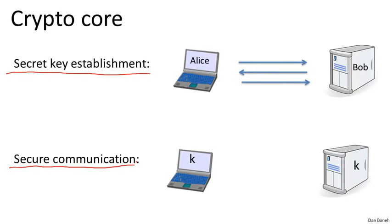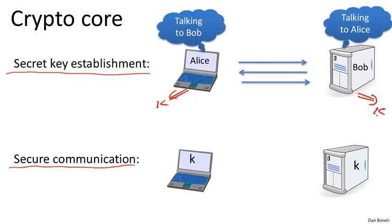Secure key establishment essentially amounts to Alice and Bob sending messages to one another such that at the end of this protocol, there's a shared key K that they both agree on. Beyond that, Alice would know that she's talking to Bob, and Bob would know that he's talking to Alice. But an attacker who listens in on this conversation has no idea what the shared key is.